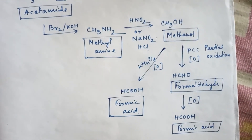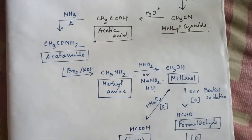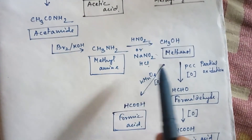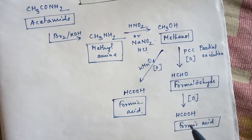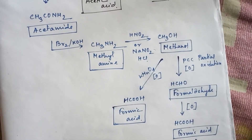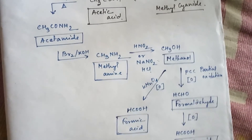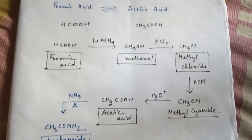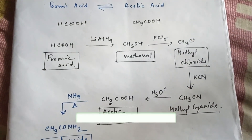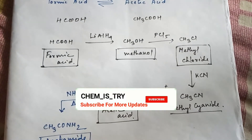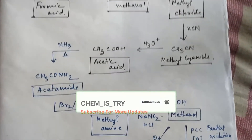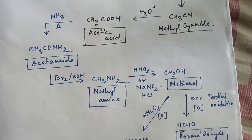So this is the process of conversion from acetic acid to formic acid. I hope this process is helpful to you all. If it is helpful, please don't forget to subscribe to my channel, like the video, and share this video as much as possible with your friends and students. Thank you so much.